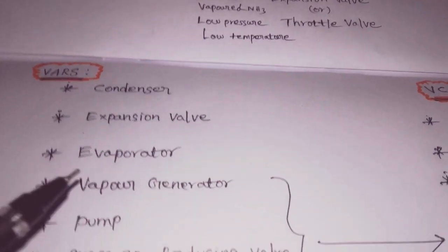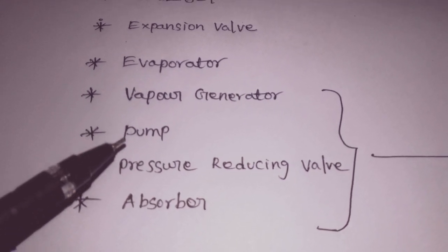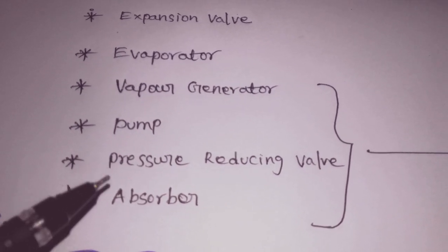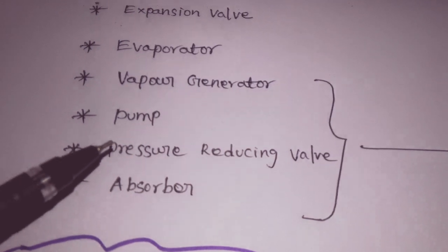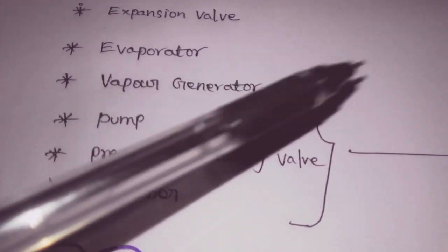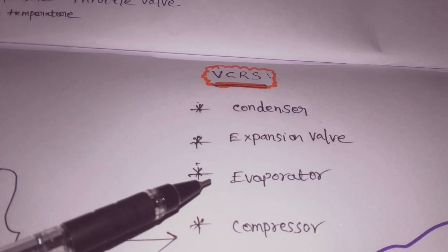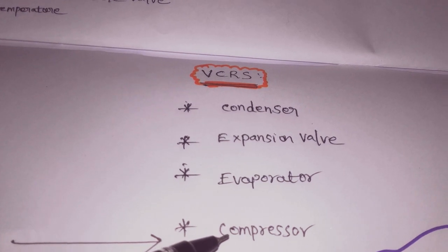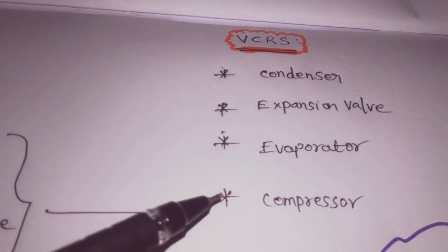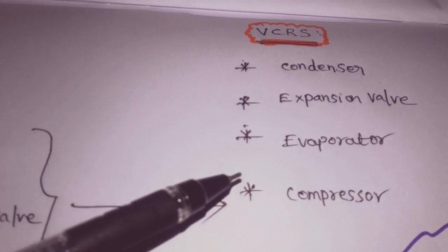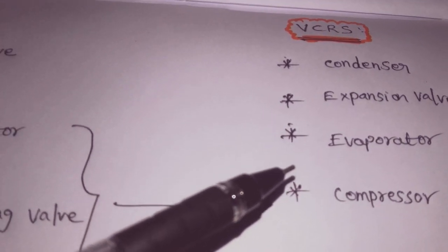The main components of the Vapor Absorption Refrigeration System are: Condenser, Expansion Valve, Evaporator, Vapor Generator, Pump, Pressure Reducing Valve, and Absorber. In comparison, the Vapor Compression System has four components: Condenser, Expansion Valve, Evaporator, and Compressor. The Vapor Absorption type has four additional components, making it an important distinction.